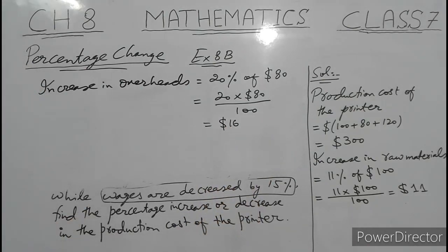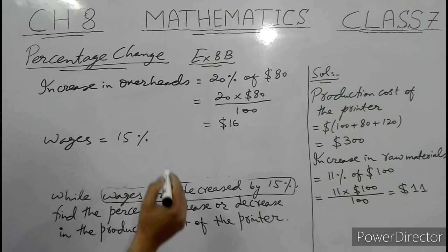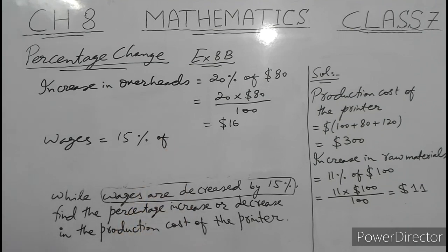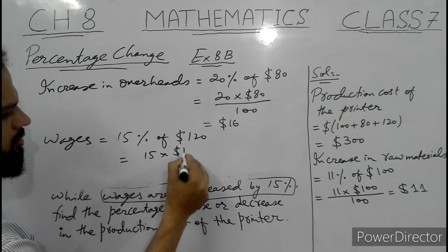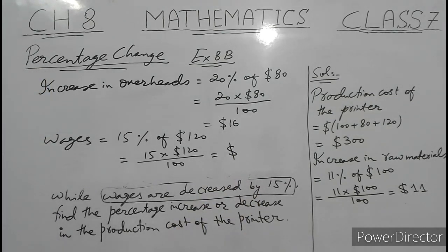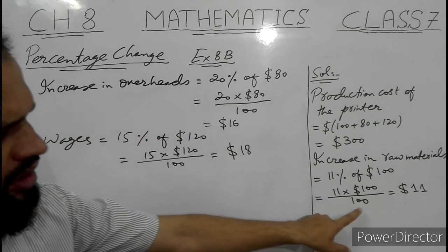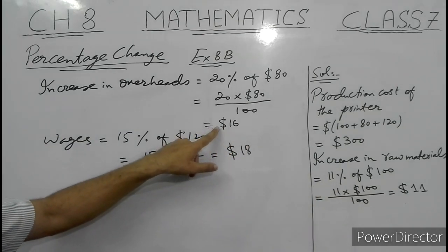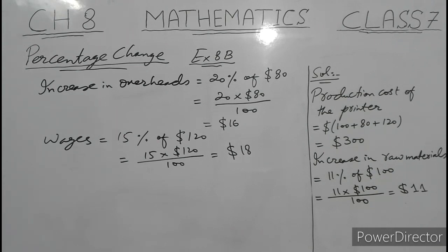Now wages are decreased by 15%. So 15% of wages, which was originally $120. If I add both the increases, it will be more than the decrease, so the overall change in the production cost of the printer will be an increase.